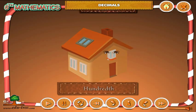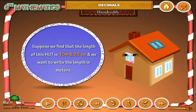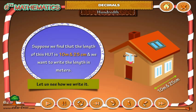Hundreds. Suppose we find that the length of this hut is 10m and 25cm and we want to write the length in meters. Let us see how we write it.